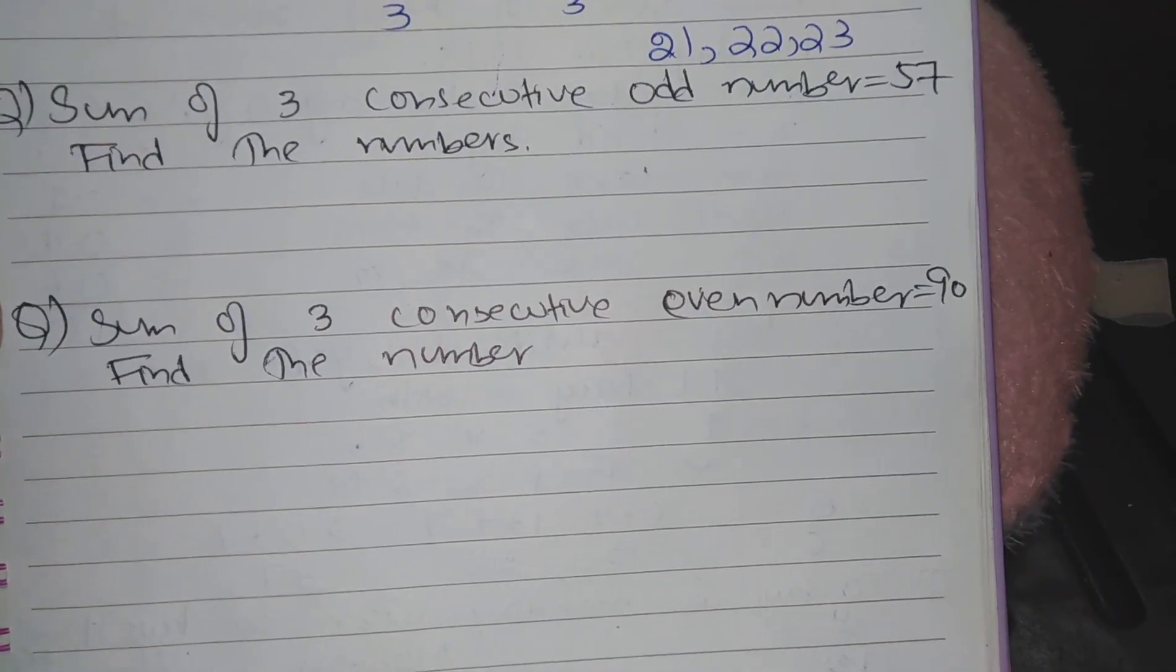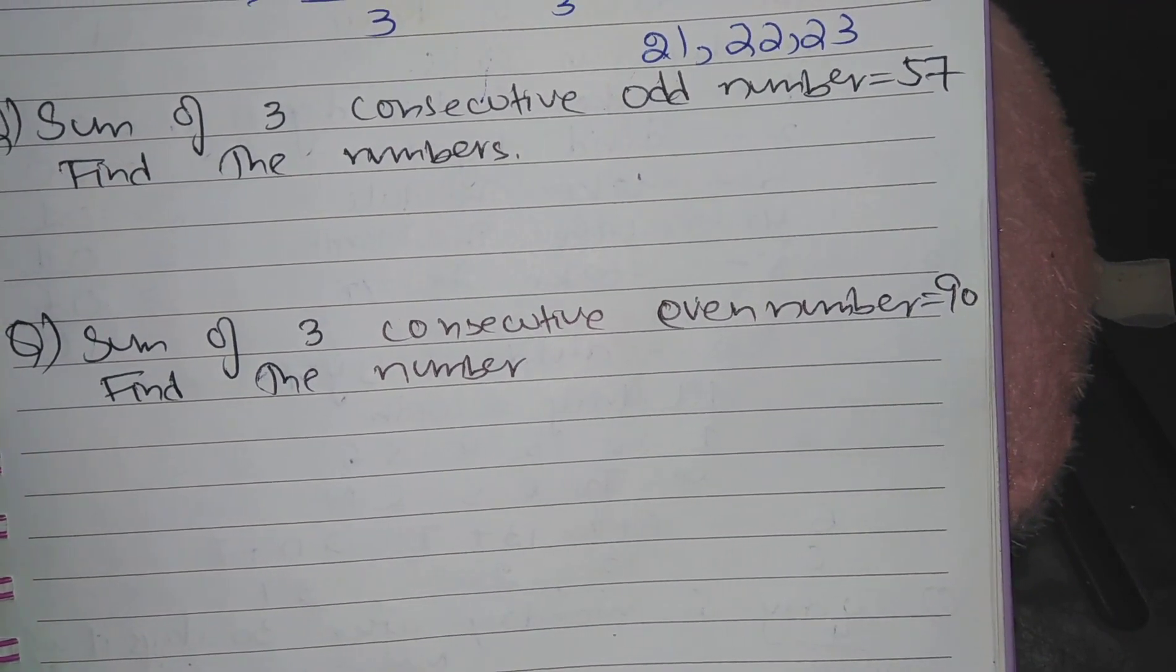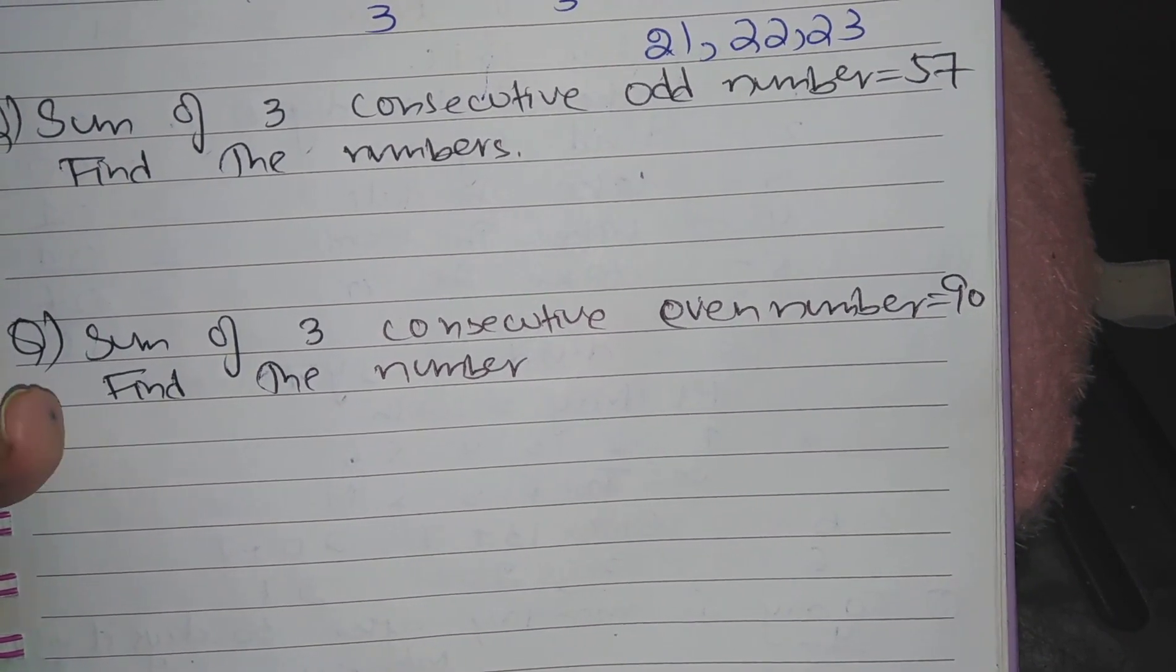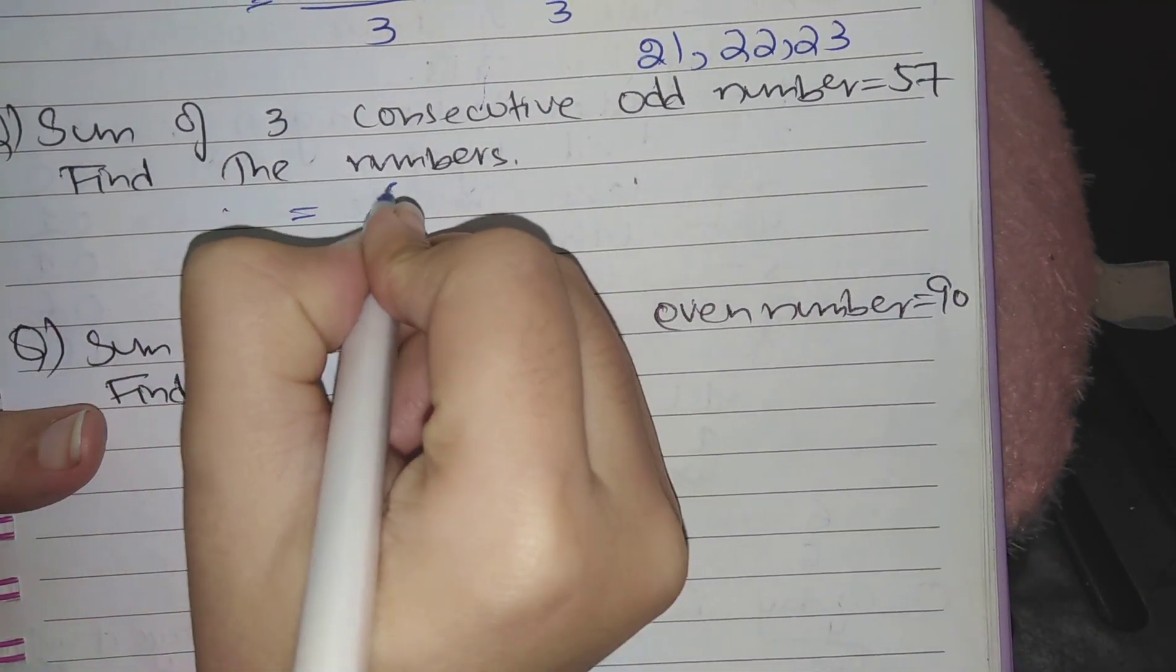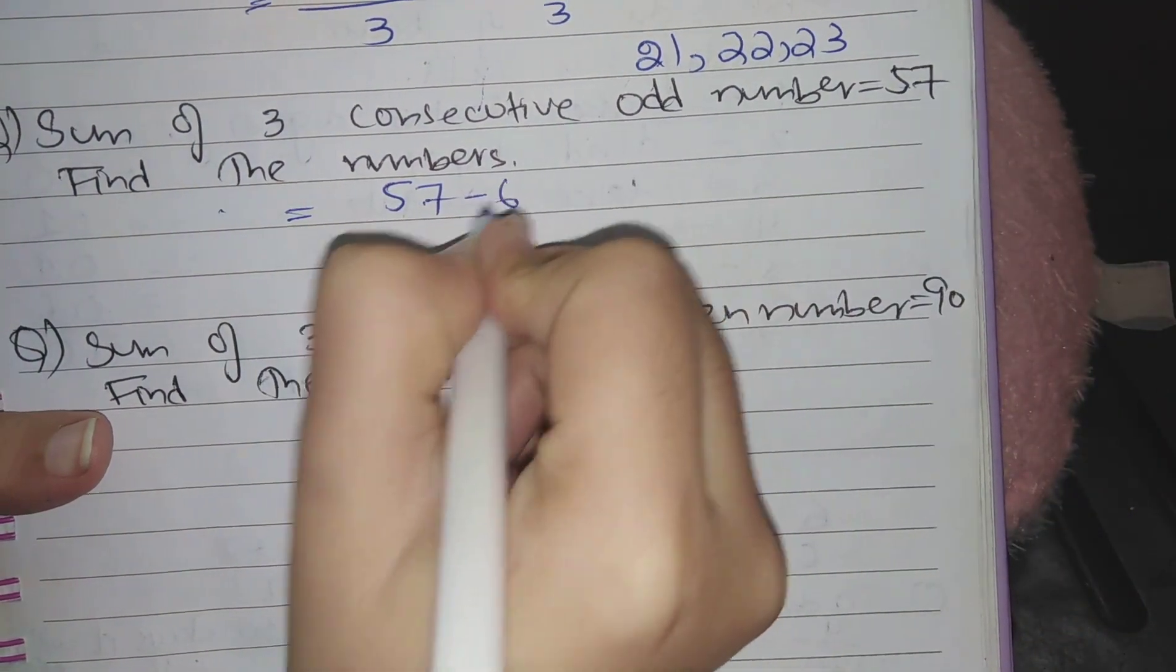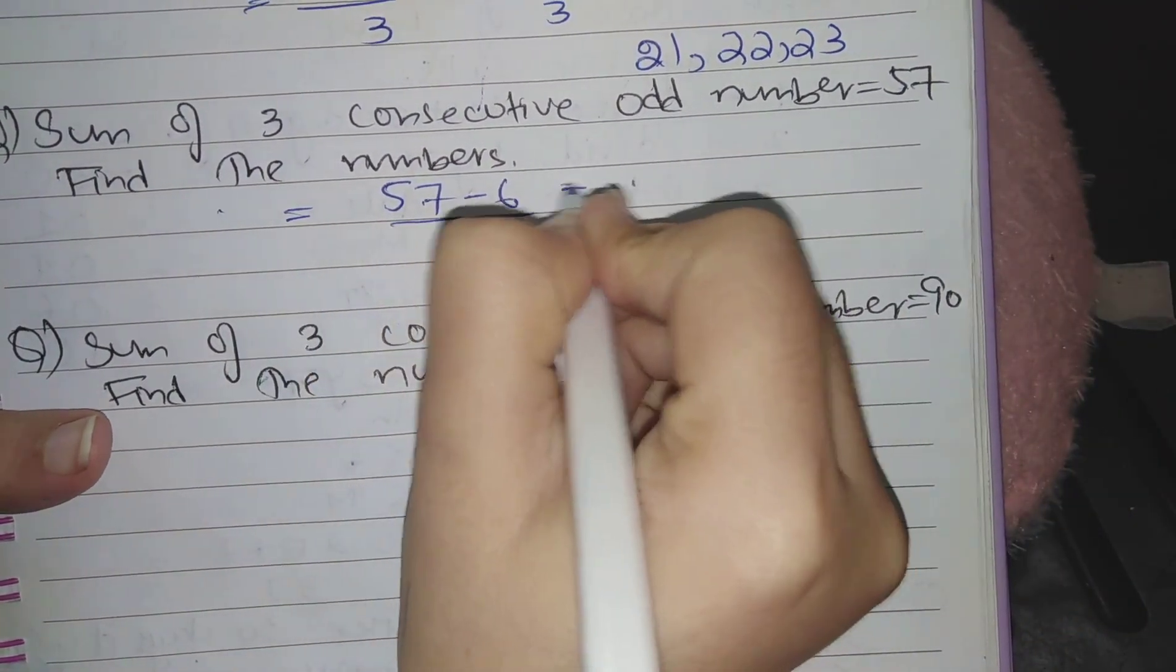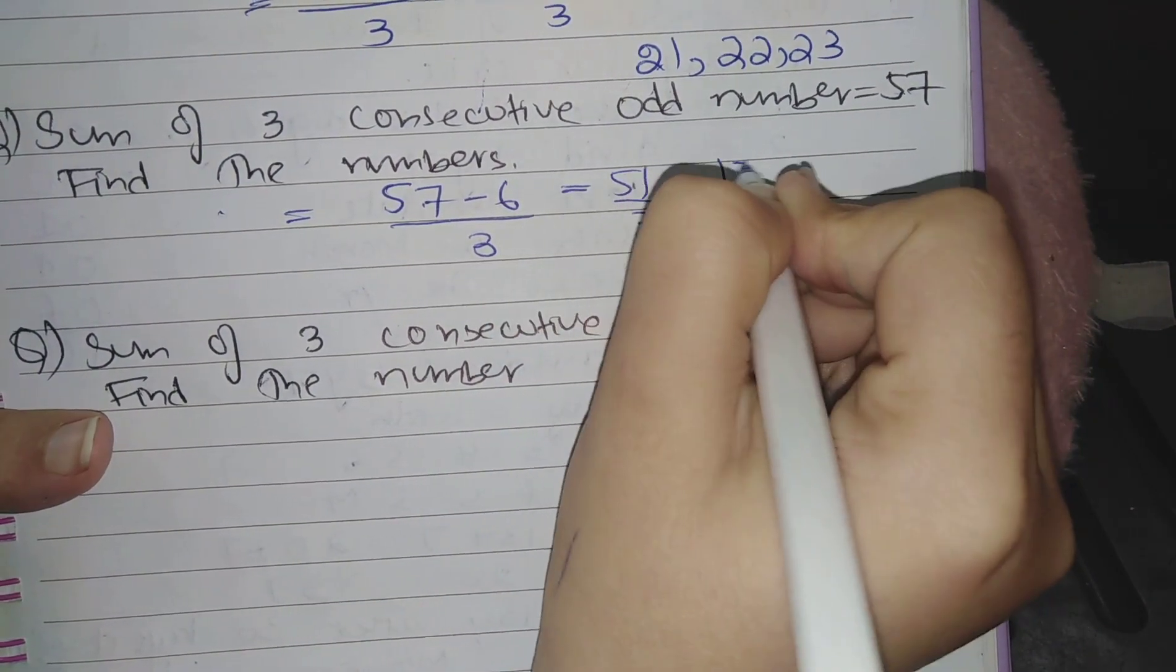Second type of questions: when there are three consecutive odd numbers whose sum is given and you have to find the numbers. There is a slight change in this shortcut trick. Just write the sum of odd numbers and subtract 6 and divide it by 3. So result is 51 by 3 which is equal to 17.